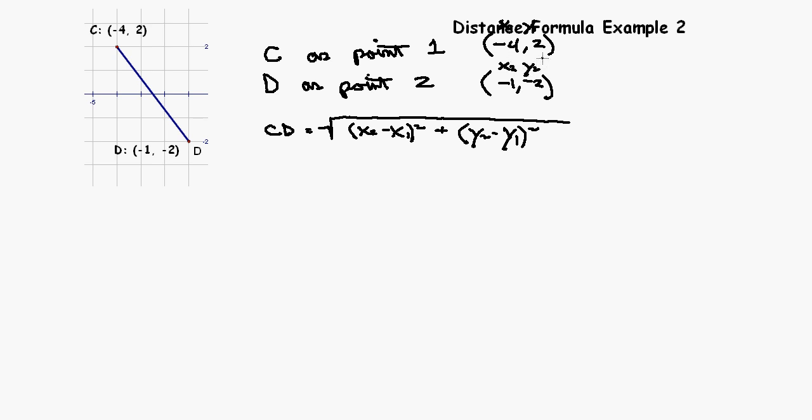Now, we're simply going to replace the x's and y's with the particular numbers. So, the distance from C to D is the square root. x2 is negative 1 minus x1 is negative 4, so that's minus 4 squared, plus y2 is negative 2 minus y1 which is 2 squared.